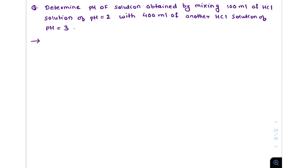Today we have a new question: determine the pH of the solution obtained by mixing 100 ml of HCl solution of pH 2 with 400 ml of another HCl solution of pH 3. We have to find the pH of the resultant solution after mixing.